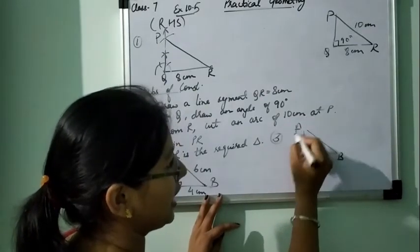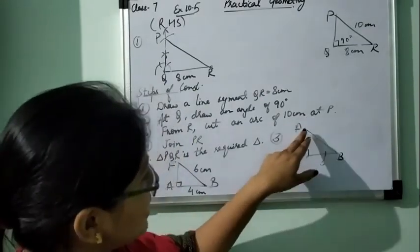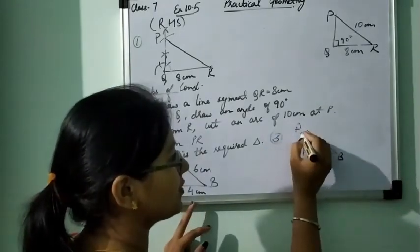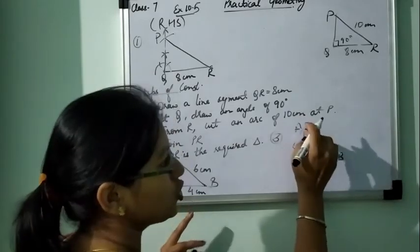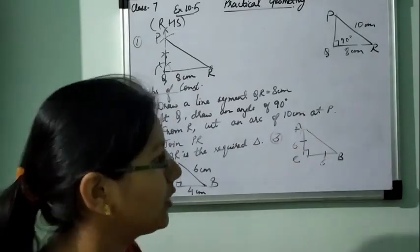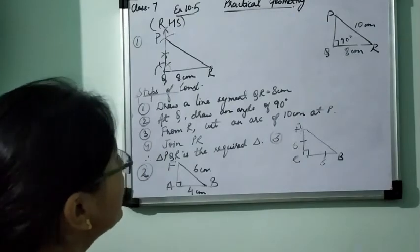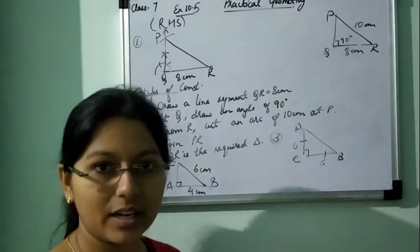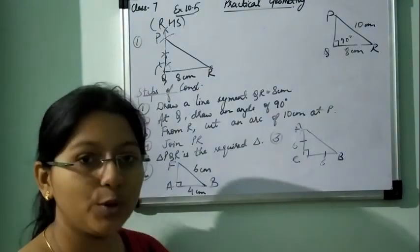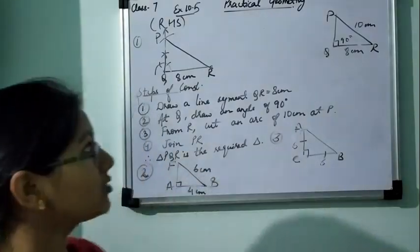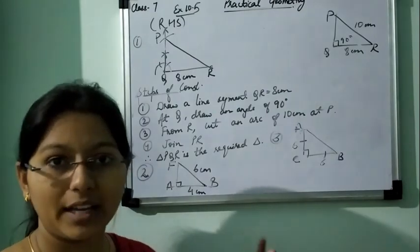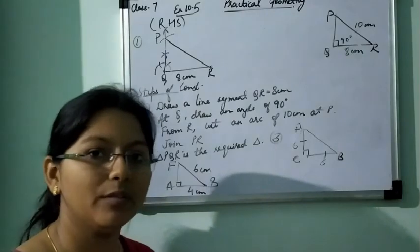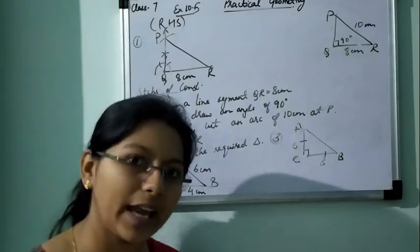In this way, our construction by RHS criteria is also over. So now I hope you all have learnt how we can do the construction of triangle by having different measurements. Just complete this exercise. For the next problem, we will meet in our next class. Thank you everyone.